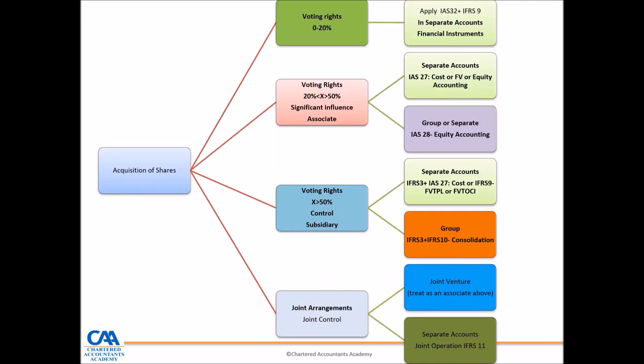When you acquire shares, there are a number of possibilities. First, you can acquire a simple investment — less than 20% — and that is a financial instrument, to which you apply IFRS9. If you acquire more than 20% and the voting rights give you significant influence, which is participation in decision-making, you have an associate. If you acquire more than 50%, you consider how to account for it in the separate financial statements under IAS27: either measure it at cost, measure it at fair value, or use equity accounting under IAS28.